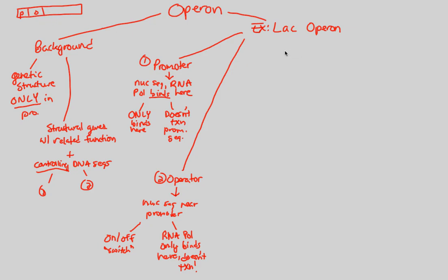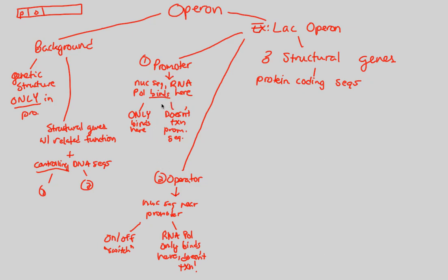What is transcribed then? At the lac operon, we are regulating three structural genes. Structural genes simply means genes that have protein coding sequences. The promoter and operator did not have protein coding sequences — they were just switches. RNA polymerase binds there but doesn't transcribe or code anything, so no proteins are made from the P and O sequences.